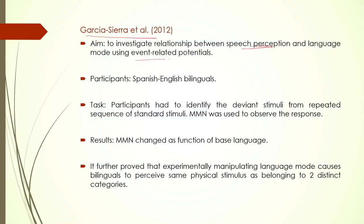An EEG machine, when attached to the head and the participant is tasked with something, produces a resultant signal that the brain emits, which is transferred to a computer in the form of a sine wave — that is our ERP, event-related potentials. This changes as a function of the stimulus given and what the participant is doing.